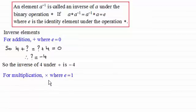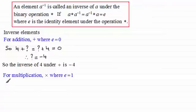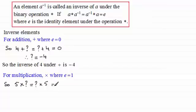We can do a similar thing for multiplication. For multiplication the identity element e was 1 — it left anything unchanged: 3 times 1 would still get 3. So if we took another real number, say 5, and wanted to find its inverse under multiplication: 5 times its inverse would be exactly the same as its inverse times 5, and that should come to the identity element for multiplication, which is 1. So the inverse of 5 would be 1 fifth — 5 times 1 fifth equals 1 fifth times 5 equals 1.